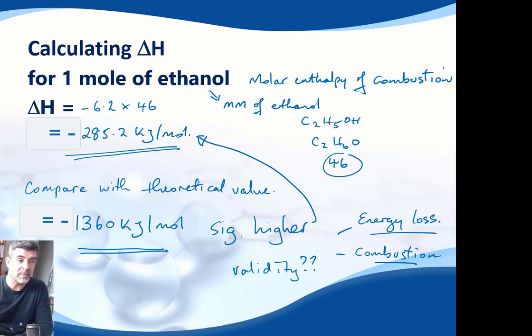So energy loss is going to mean we're not going to collect as much energy as we would expect. So that's going to drop our value. Incomplete combustion may also mean that we have less energy than we would otherwise have for complete combustion. So combined together, these sorts of things can significantly lower the value that we expect to get theoretically when we do it experimentally.